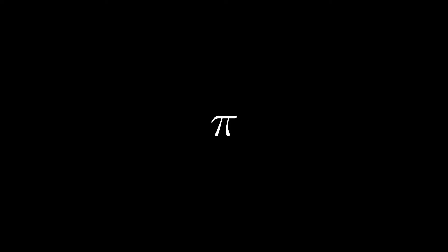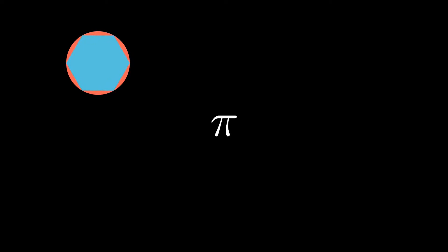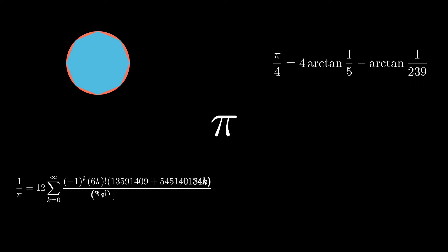Pi is, without a doubt, the most famous number in all of mathematics. From Archimedes' method of exhaustion, to Moshin-like formulae, to even the Chudnovsky algorithm, countless methods have been invented for the sole purpose of crunching out digits of pi.